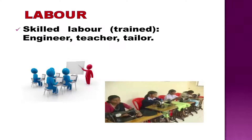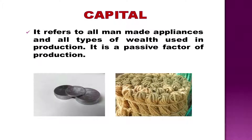However, to become an engineer, a doctor, a teacher, a lawyer, a mechanic, an electrician or a tailor, etc., one has to acquire skills through education and training. Capital, the third factor of production, is all manmade machines and appliances and all types of wealth used in production. Capital consists of machinery, tools, buildings, materials, etc. Whereas land is a natural resource, capital is a manmade resource.